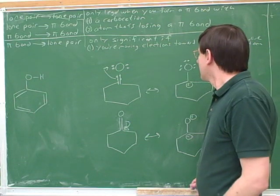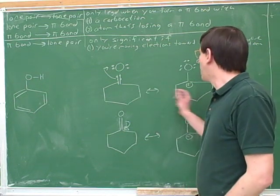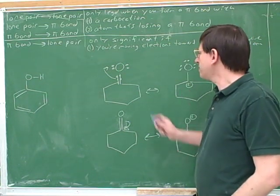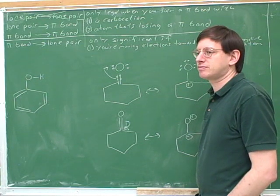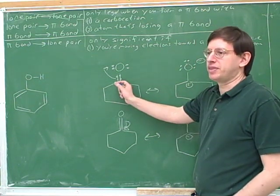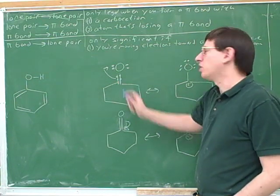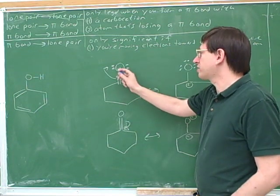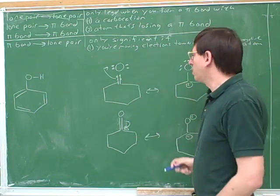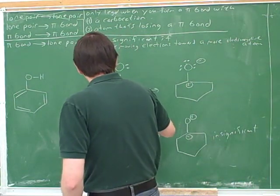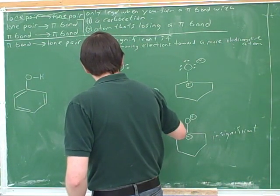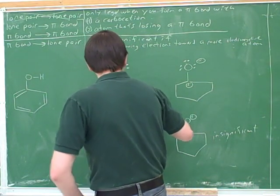On the other hand, these two structures are both significant and both worth writing. Which of these is more significant? The more stable one is on the left, because it has no charges, for one thing. Even though oxygen is more electronegative, it doesn't actually like having a charge. So this is the most significant structure.